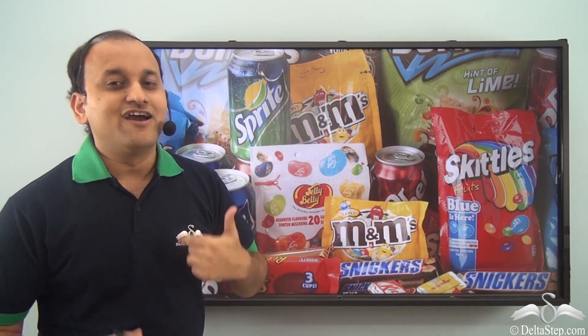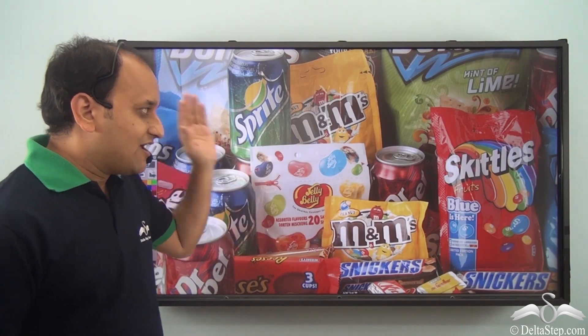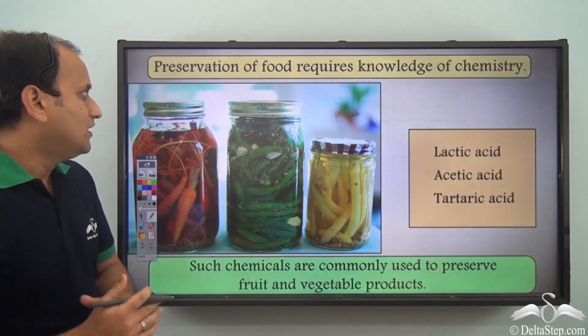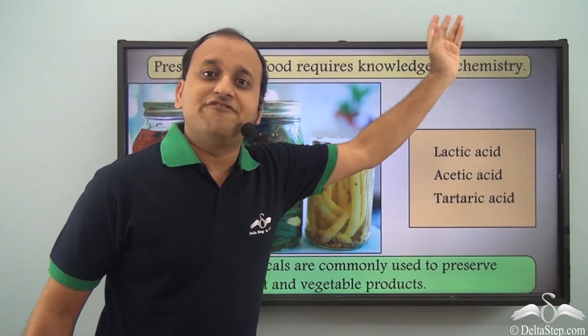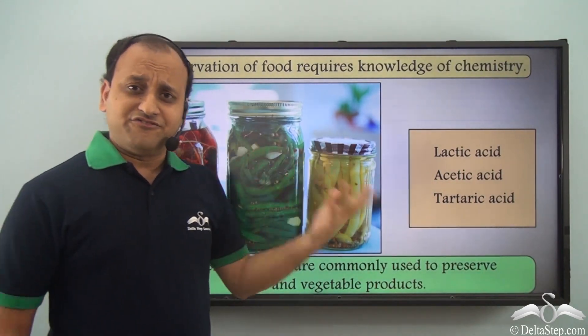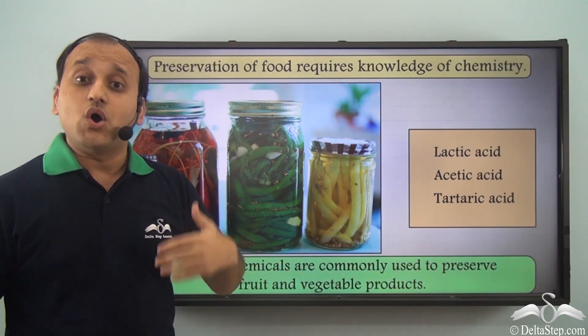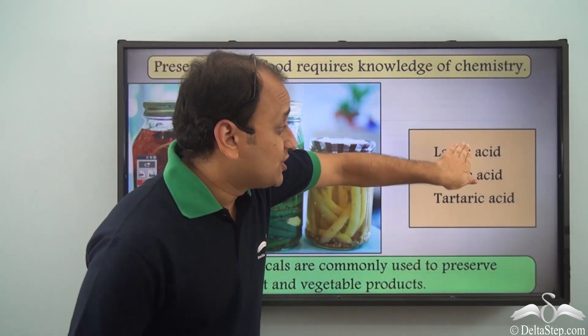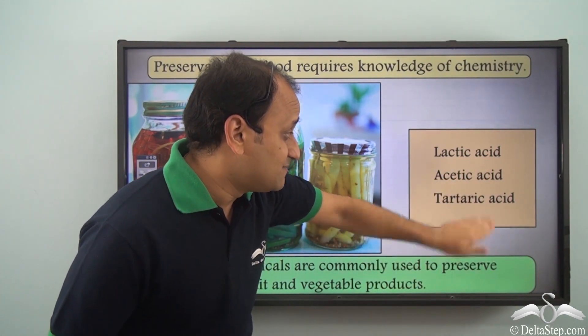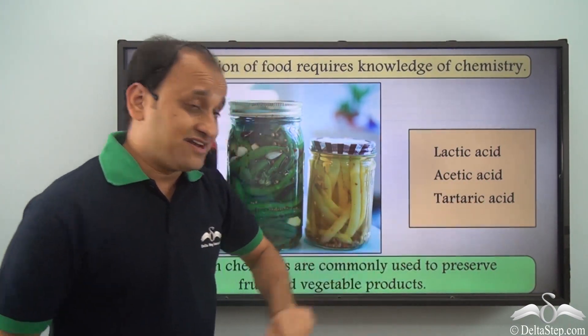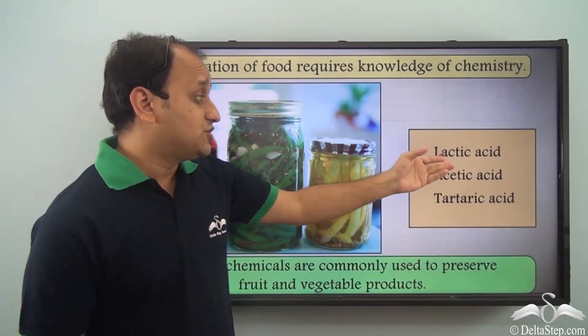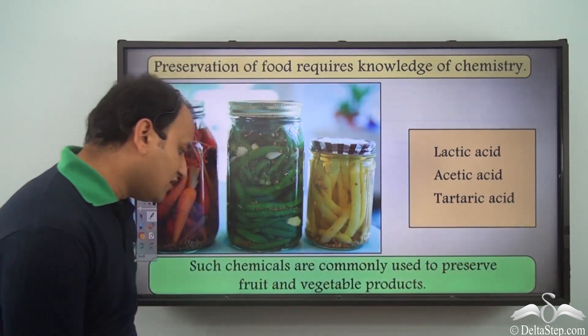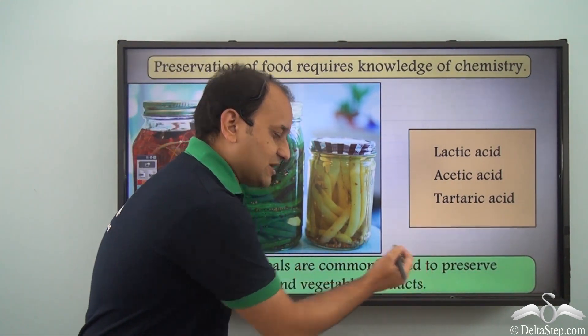Well, again we have chemistry. So because of chemistry we are able to preserve all such food items. So preservation of food requires knowledge of chemistry. So as you can see, different types of pickles and jams all are preserved for a very long time. Because we use such chemicals like lactic acid, acetic acid, and tartaric acid. So these are common chemicals which are used for preservation of food. So such chemicals are commonly used to preserve fruit and vegetable products.